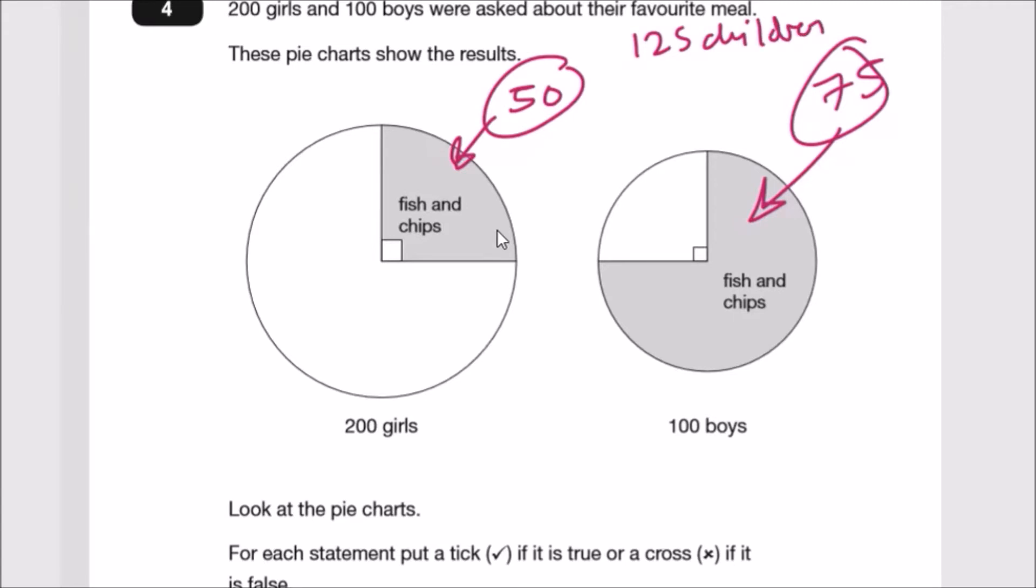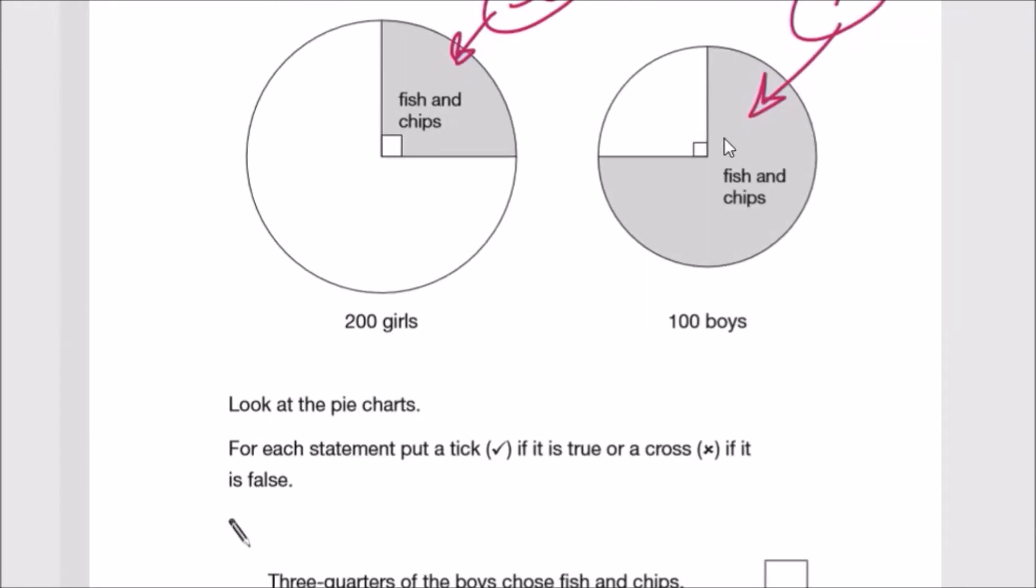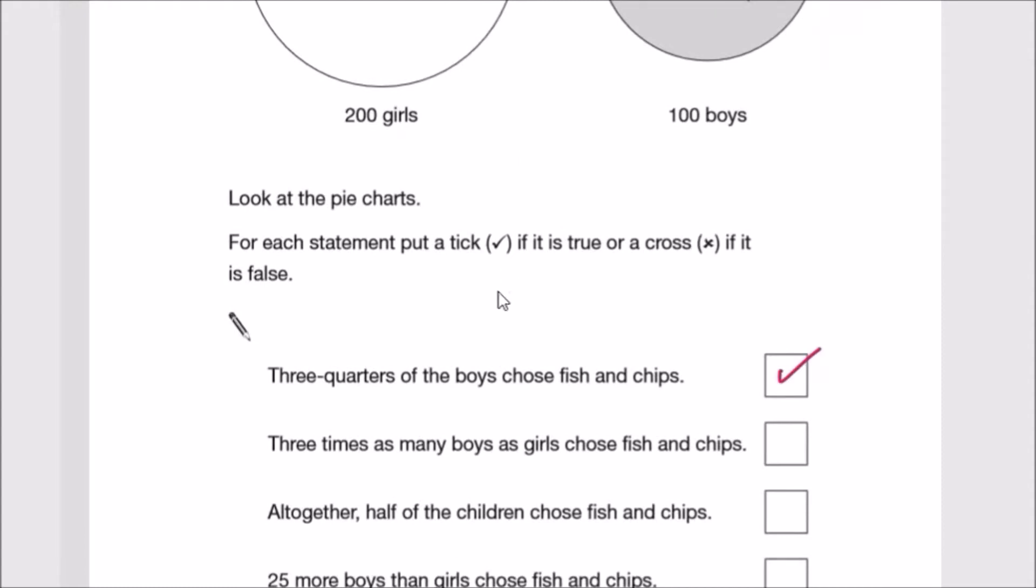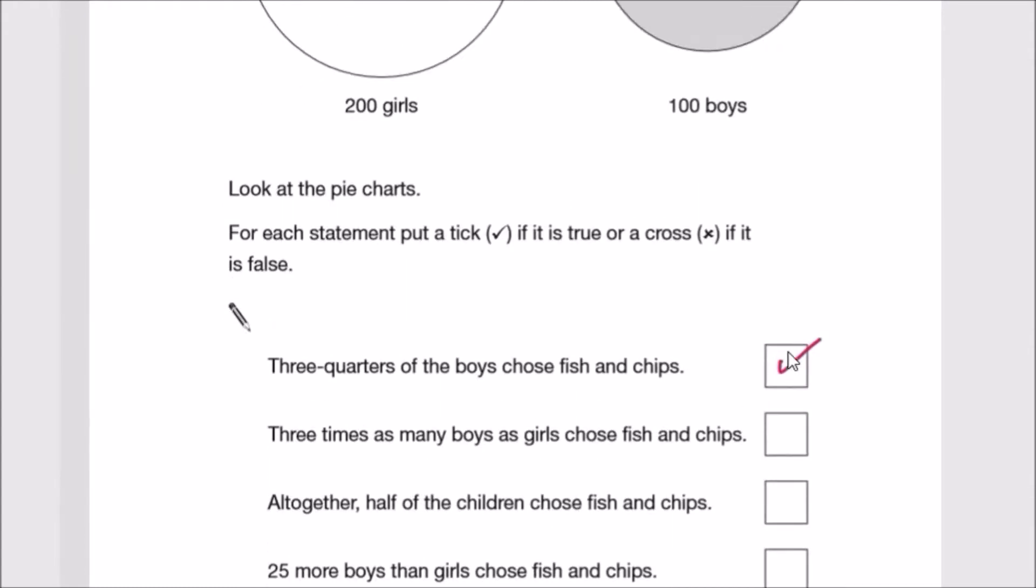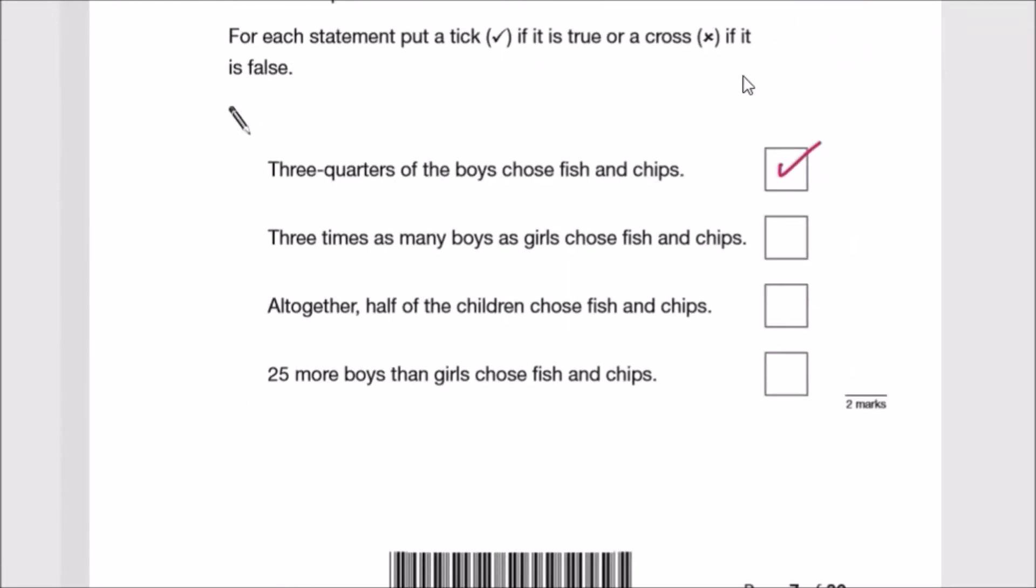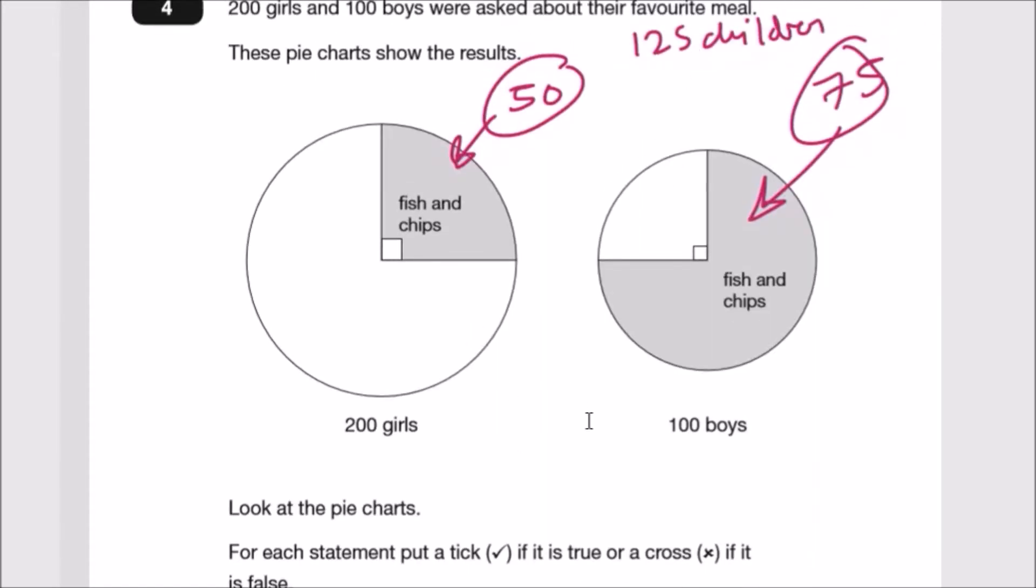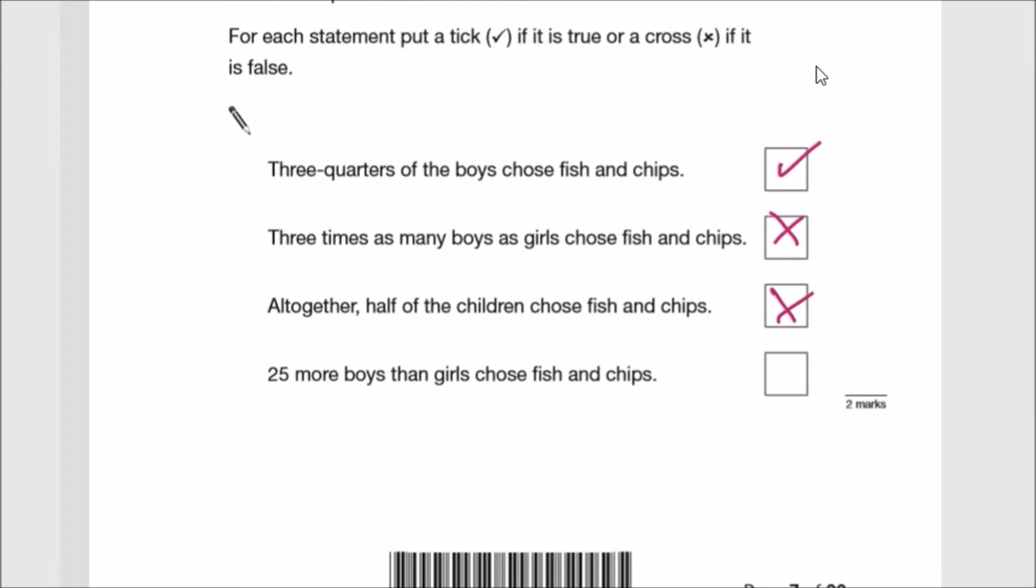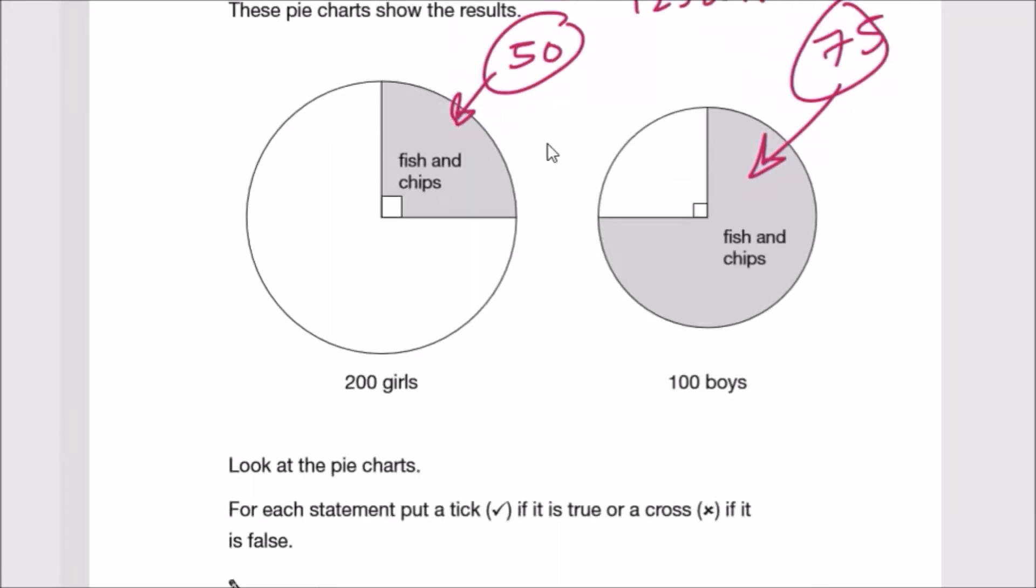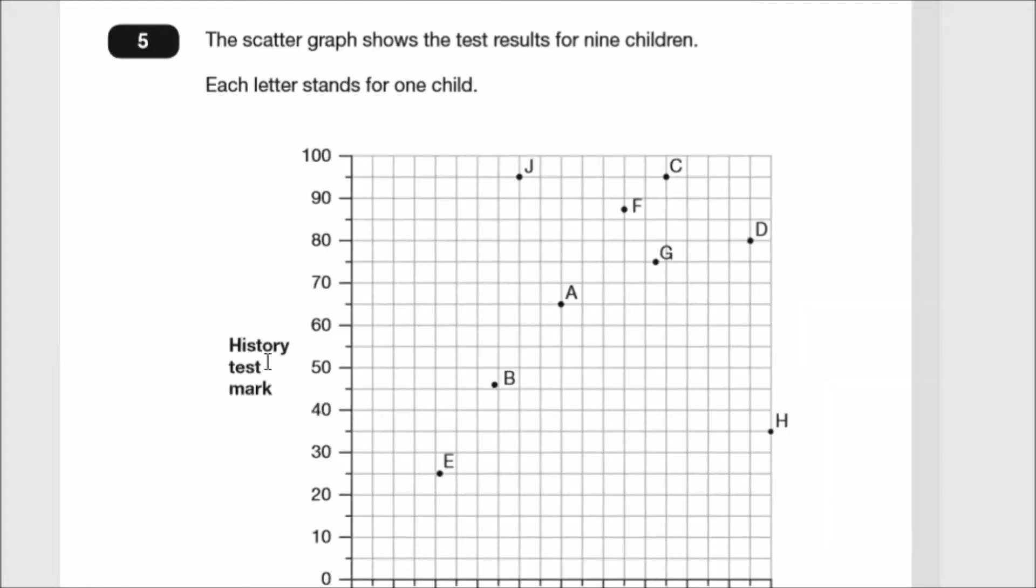The total number of children is 125 who liked fish and chips. Let's look at the statements. Three quarters of the boys chose fish and chips: yes. Three times as many boys as girls chose fish and chips: we have 75 boys and 50 girls, so false. Half of the children chose fish and chips: false, half would be 150 but we've got 125. 25 more boys chose fish and chips: yes.